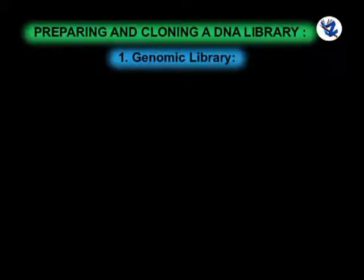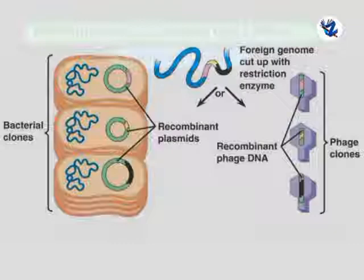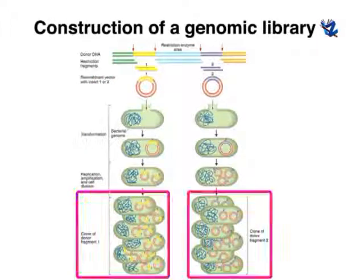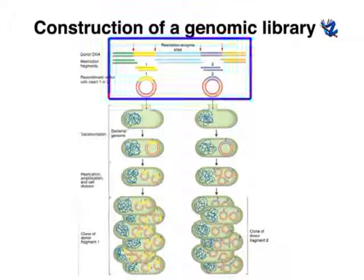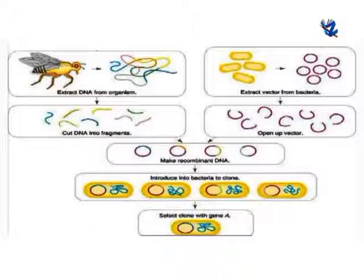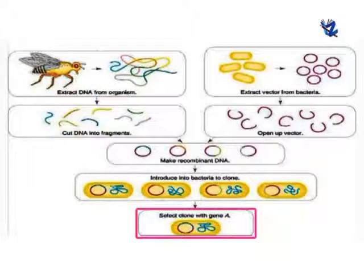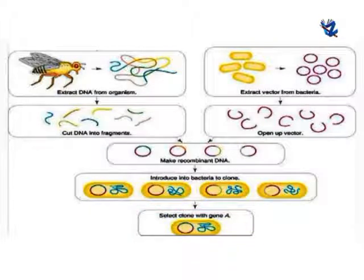Preparing and cloning a DNA library. First type: genomic library — it is a collection of all clones of DNA fragments that represent the complete genome of an organism. For construction of a genomic library, the entire genome (DNA) is isolated and cut into fragments using a suitable restriction endonuclease. These fragments are then inserted into cloning vectors. The recombinant vectors are then transferred into suitable organisms such as bacteria or yeast. Screening for the desired gene can be done through complementation or using probes.